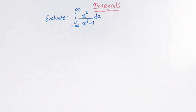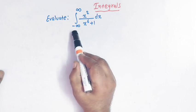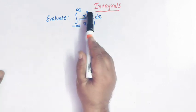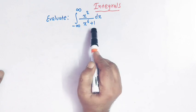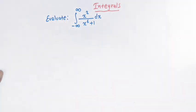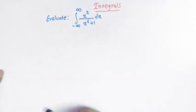Hello viewers! In today's class, we are going to discuss yet another important and very conceptual problem from integrals. In this lecture, we'll solve this integral from minus infinity to infinity, where the integrand is x squared divided by x raised to 6 plus 1. We'll solve this integral by making use of the properties of beta and gamma functions.